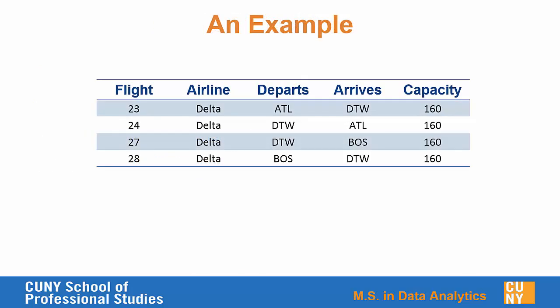Here's a simple example. Suppose we want to store flight information across the United States in a graph database. That makes sense since flights connect cities, and there's a certain amount of connectivity we might want to capture. Here you can see four rows from a dataset where we've got a flight number as the ID for each flight, and then the airline, the departure airport, the arrival airport, and the capacity for the flight. We need to figure out the right way to model that.